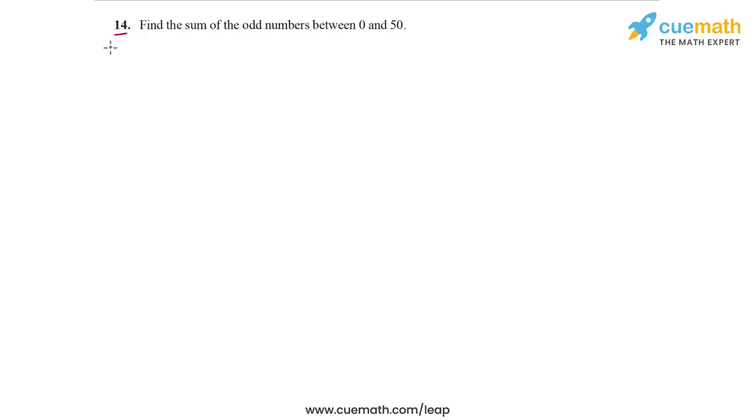In question 14 of the exercise, the problem statement says, find the sum of the odd numbers between 0 and 50.